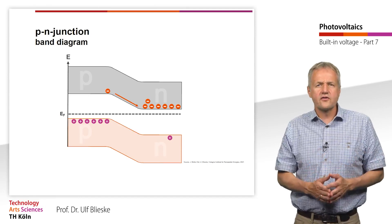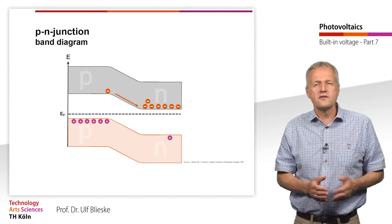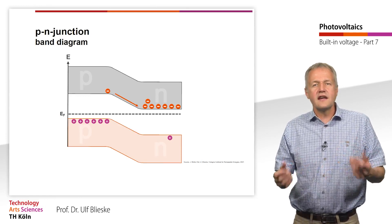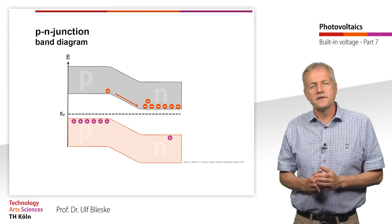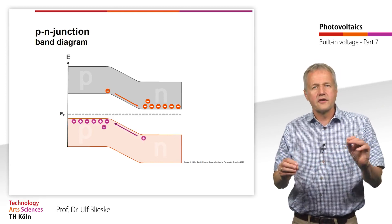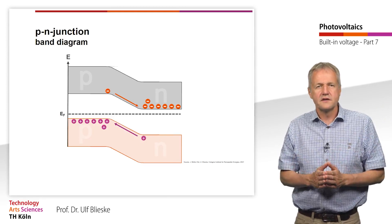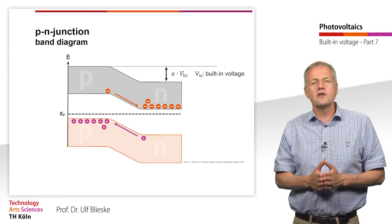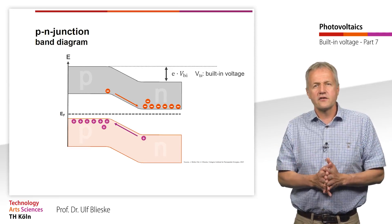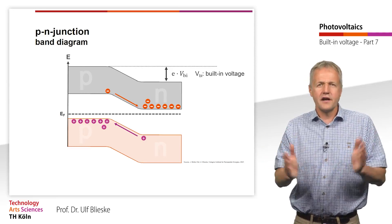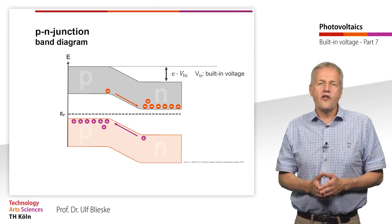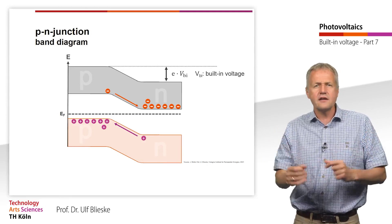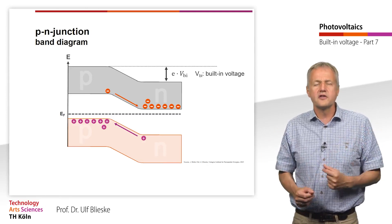Electrons in the n region face a big energy barrier that they cannot overcome. The reverse is true in the valence band. For the holes, the energetically more favorable state is the state with the higher energy. Therefore, the holes drift from the p to the n region. The width of the band bending corresponds to the width of the depletion zone where no free charge carriers — or hardly any charge carriers — are found.